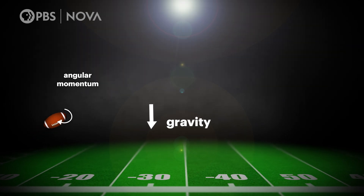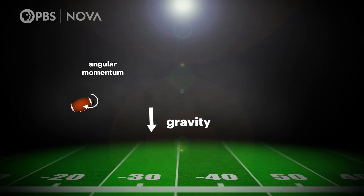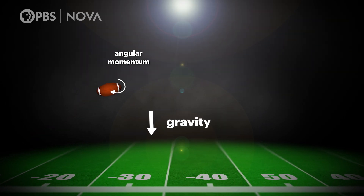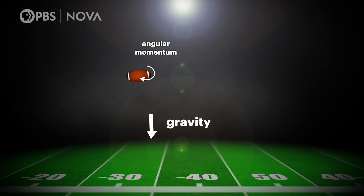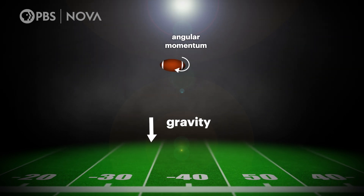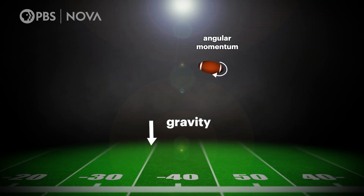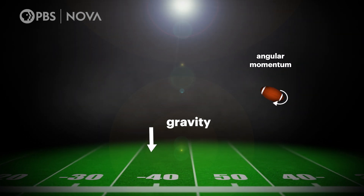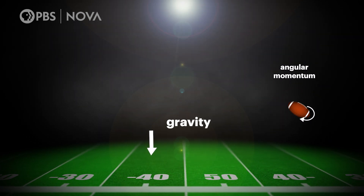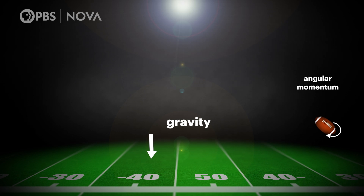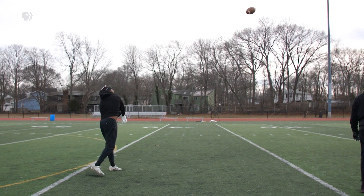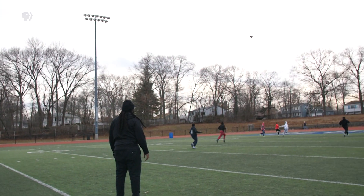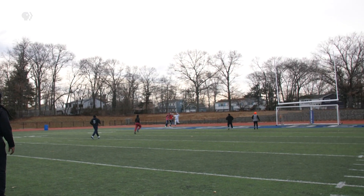Gravity absolutely acts on the football, but its effect is to cause the ball to go up and then come down in that curved parabolic trajectory. Put them all together and you get that beautiful pass.